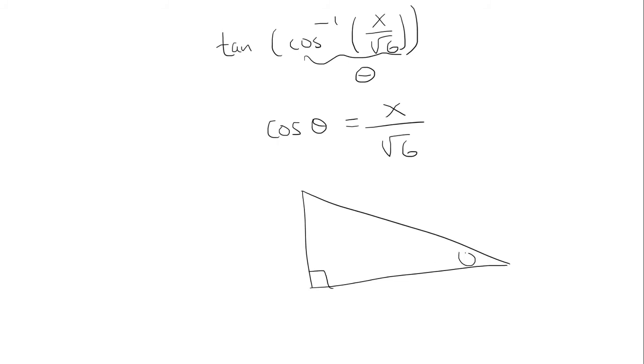We'll call this angle theta. Cosine is adjacent over hypotenuse, so that's going to be x and root 6. We're going to use the Pythagorean theorem to find the missing side.